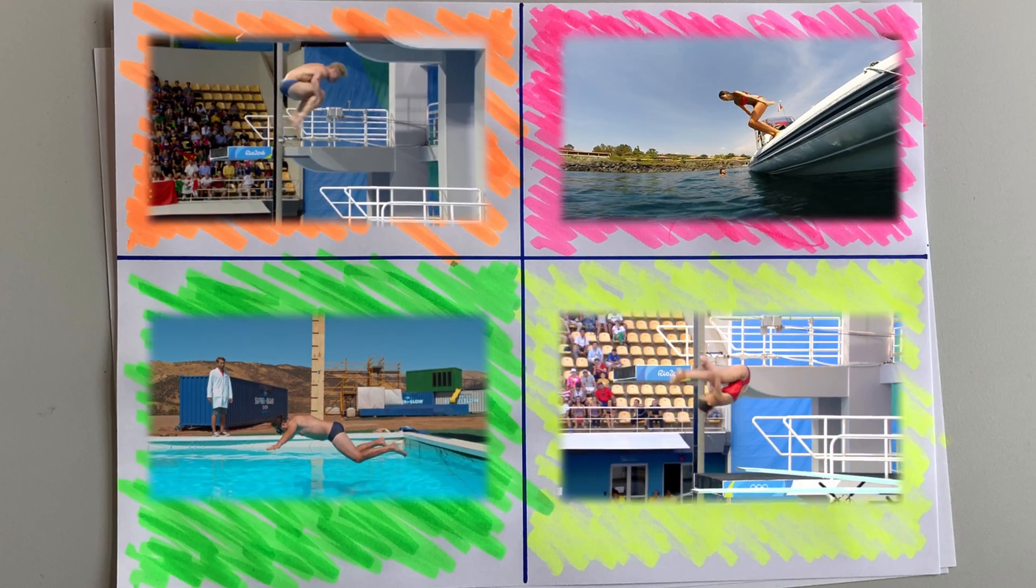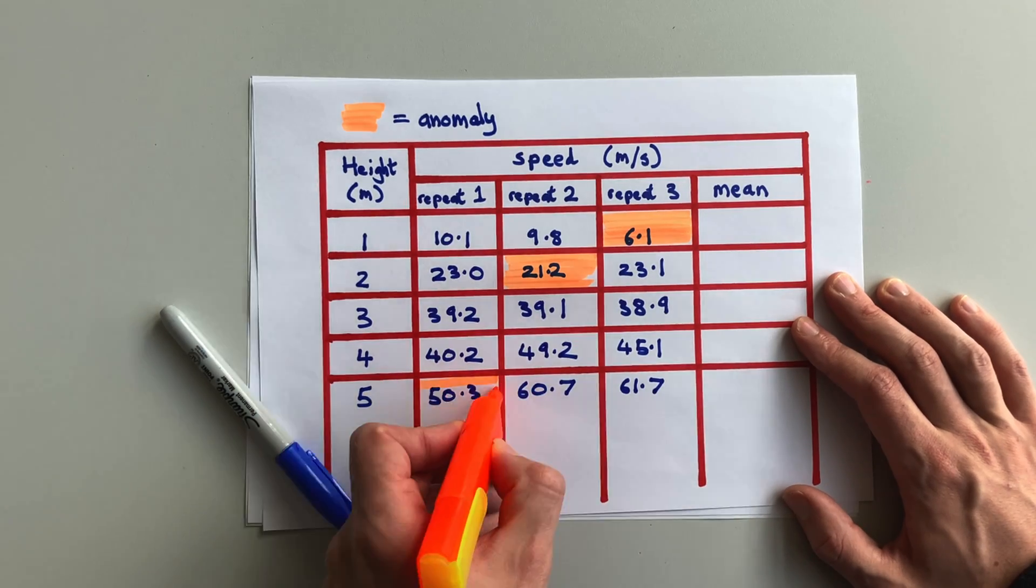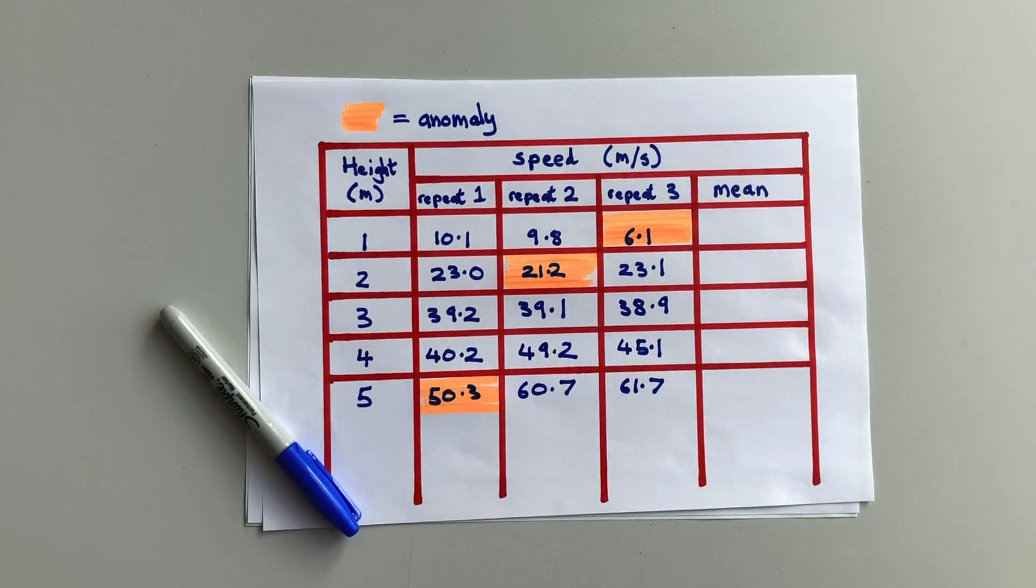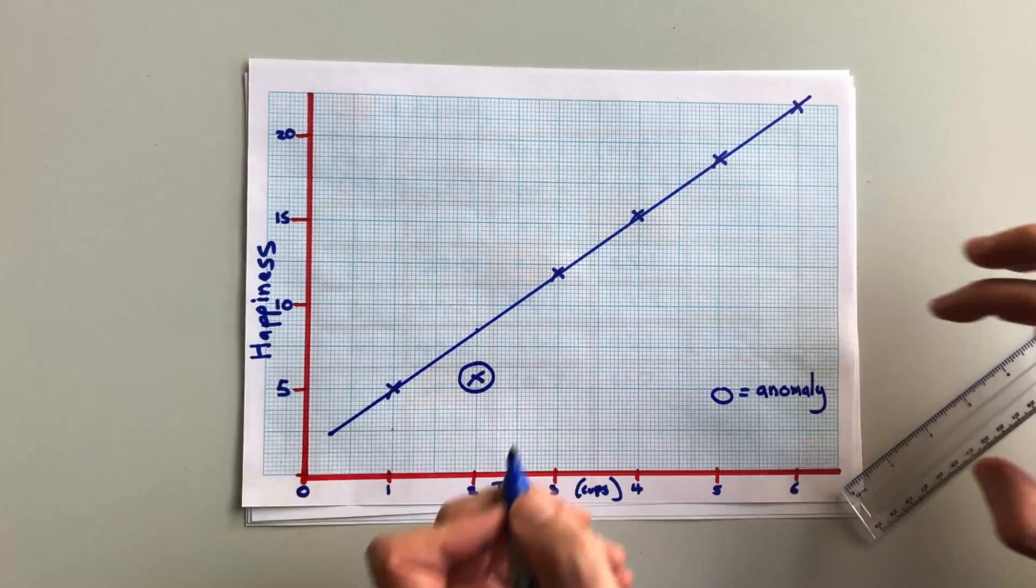To summarize, finding anomalies is playing spot the difference. On a results table, you're looking for a number that's different from the others, and on a graph, you're looking for a point that's particularly far from the line of best fit.